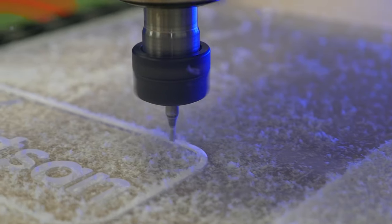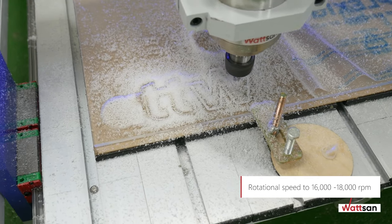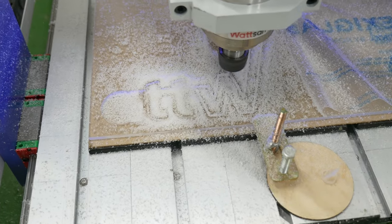We selected the optimum speed for the spindle by trial. We recommend that you set the rotational speed to 16,000 to 18,000 rpms.